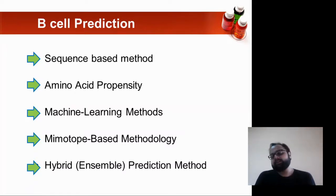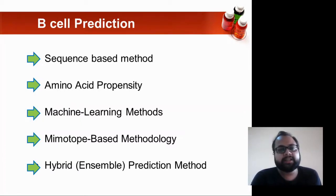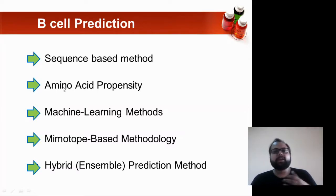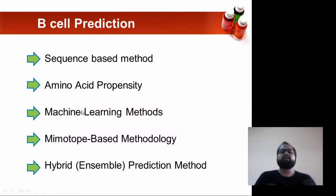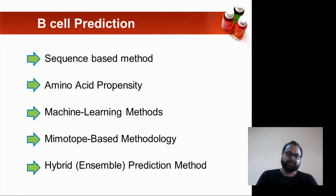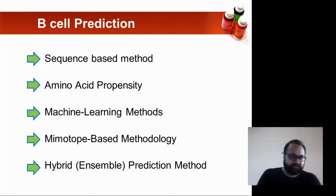The next approach is called the hybrid method. As the name suggests, it is an ensemble or mixture of two or more methods — for example, machine learning and amino acid propensity coming together, or sequence-based and machine learning combined to develop a much better prediction model. So these are the six important methods for B-cell prediction: sequence-based, amino acid propensity, machine learning, MIMOTOPS-based, and hybrid.